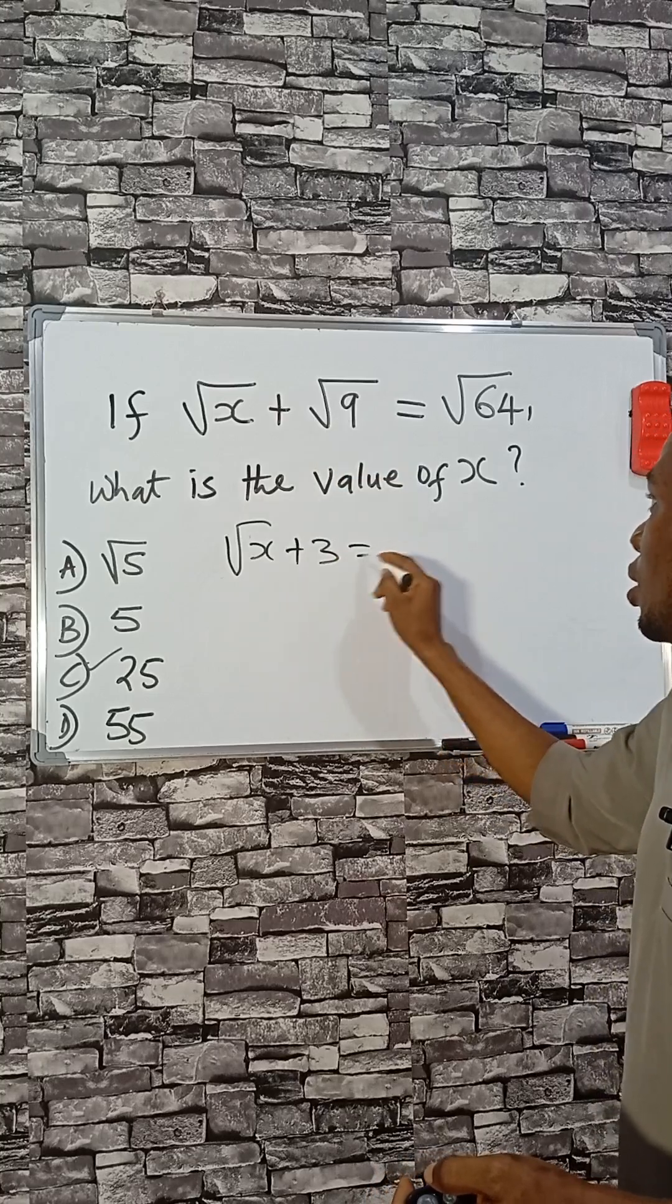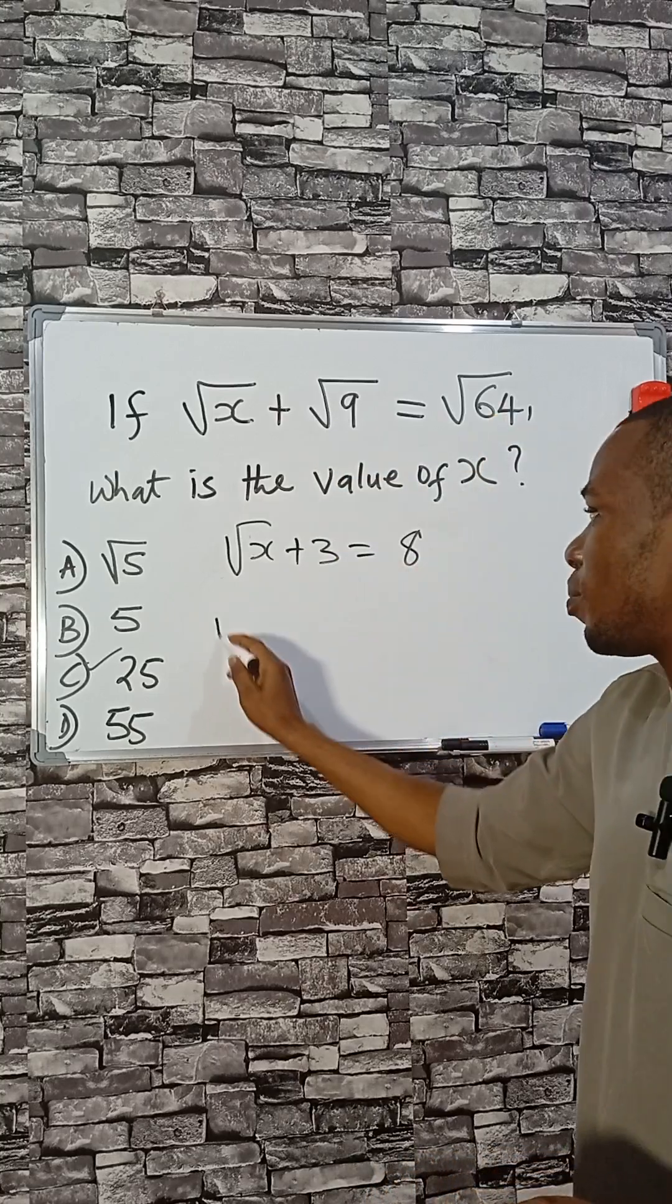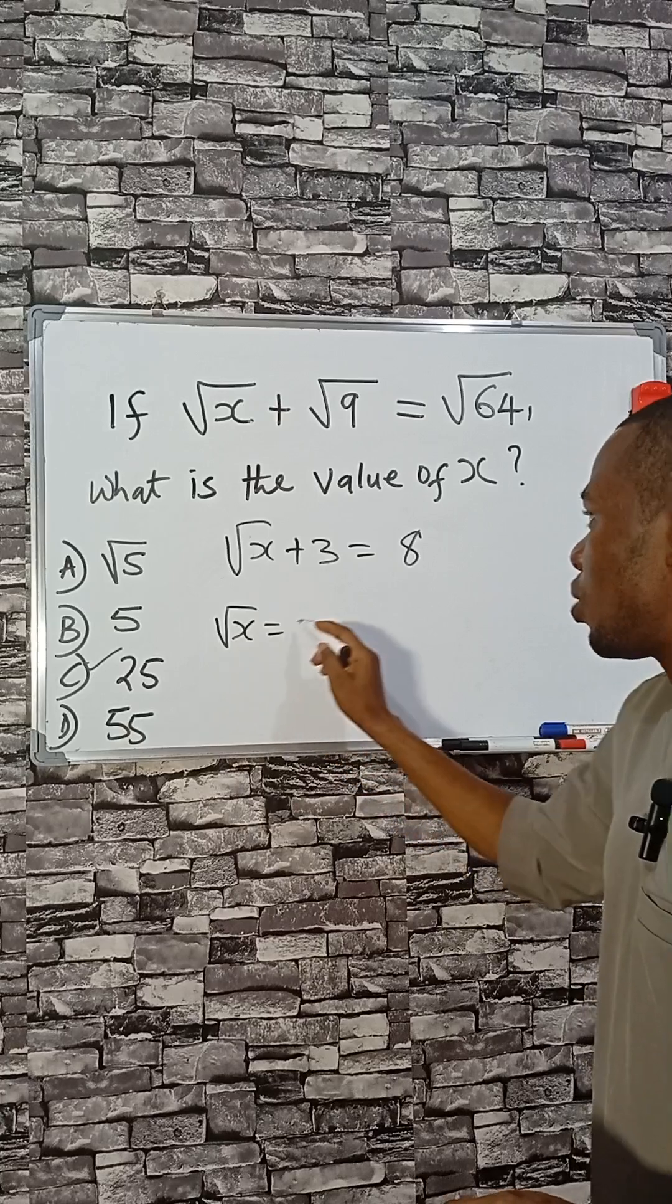Square root of 9 is 3, root of 64 is 8. So if I make root x the subject, I will have 8 minus 3, that will be 5.